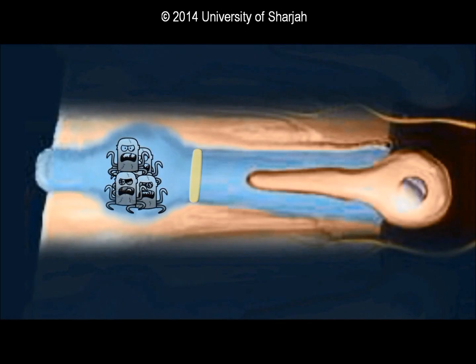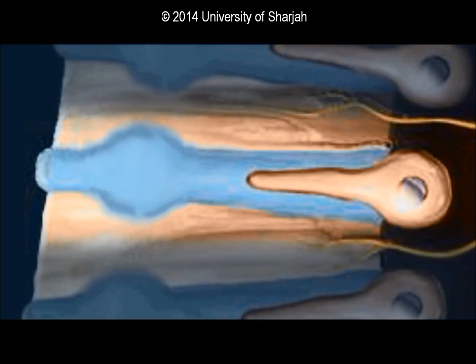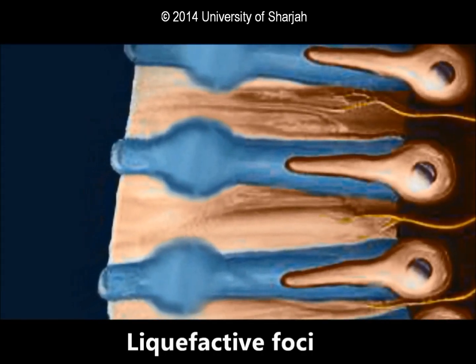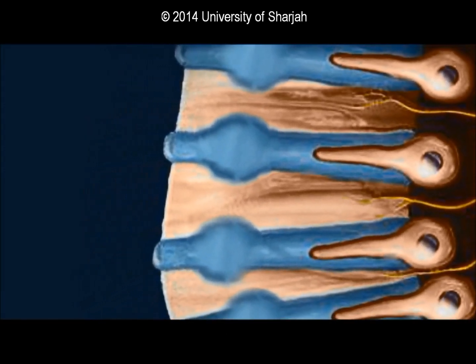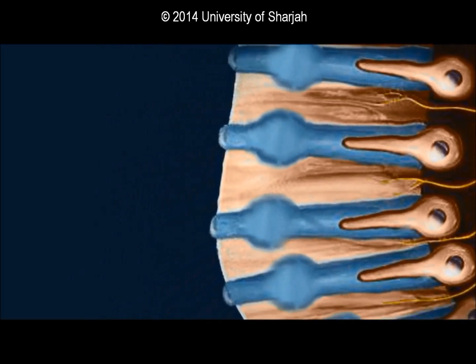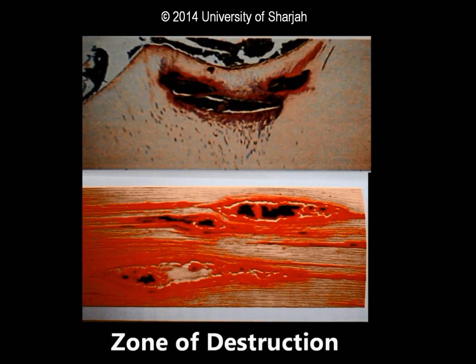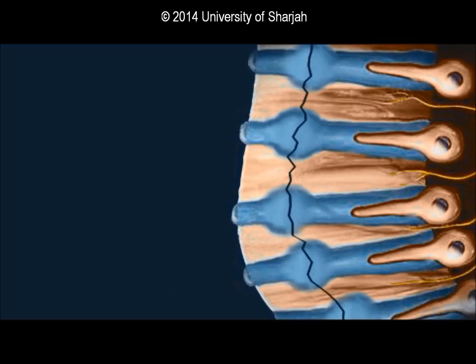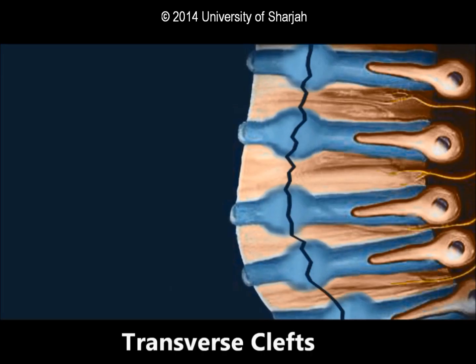The peritubular dentin is first compressed, followed by intertubular dentin, resulting in liquefactive foci. Liquefactive foci run parallel to the direction of the tubules and may be multiple. These changes are enhanced in the zone of destruction — the fifth zone — where, after enamel has been cavitated and bacteria infect the dentin, the dentin becomes necrotic and liquefies. Cracks appear in the dentin, usually at right angles to the direction of the dentinal tubules; these are called transverse clefts.